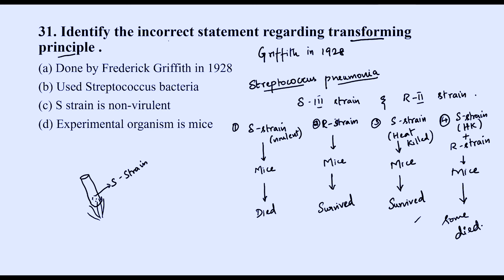Reviewing the options: option A — done by Frederick Griffith in 1928 — is correct. Option B — used Streptococcus bacteria — is correct. Option C — S strain is non-virulent — is the incorrect statement, since S strain is actually virulent. Option D — experimental organism is mice — is correct. So the incorrect statement is C.